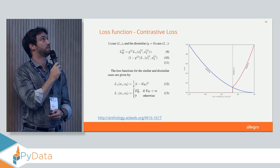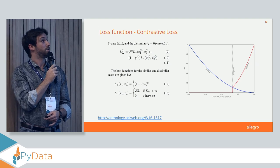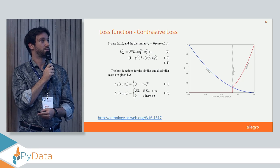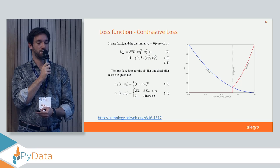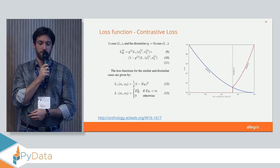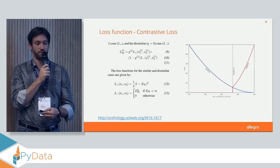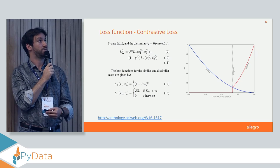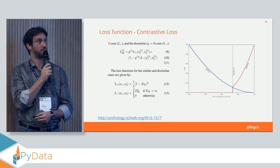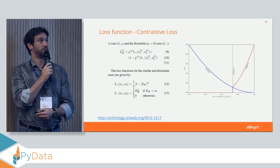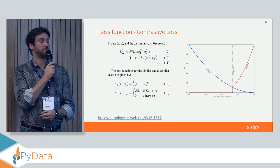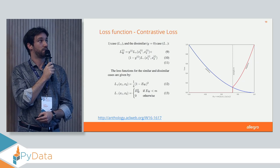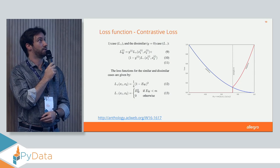Briefly about the contrastive loss function: there is different loss for different pairs. For a negative pair that already has high similarity, you want to penalize harder than for a positive pair with low similarity. You set a margin — determined via descriptive analysis — and when the similarity exceeds that margin, the model is penalized with a higher cost.